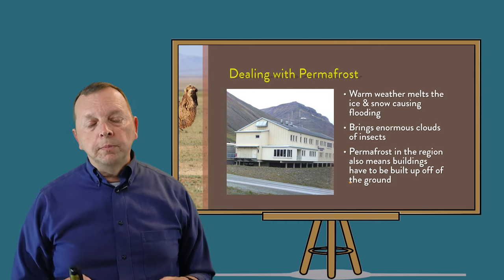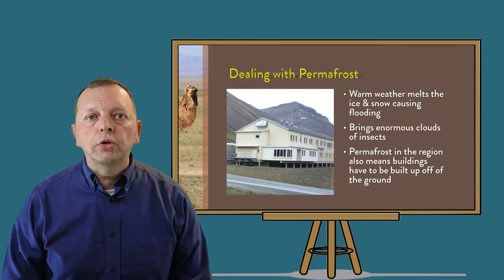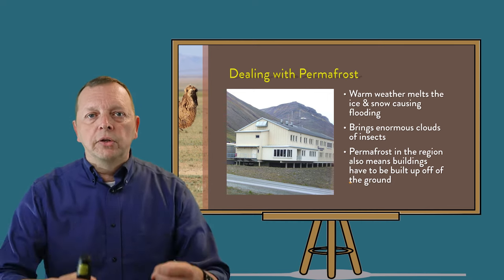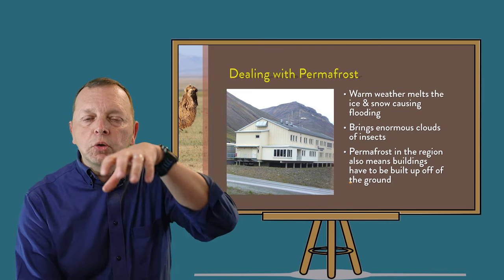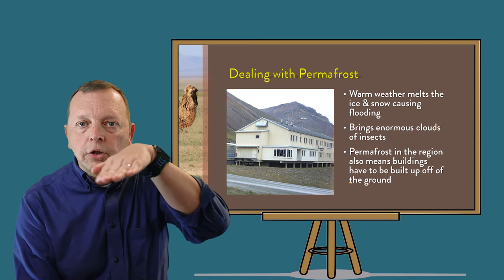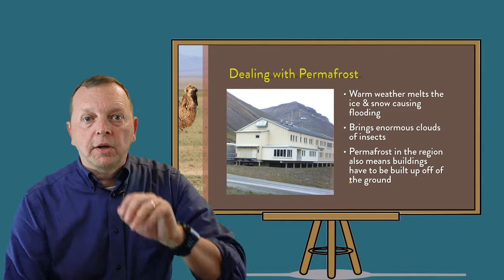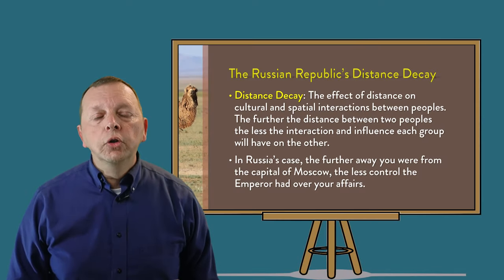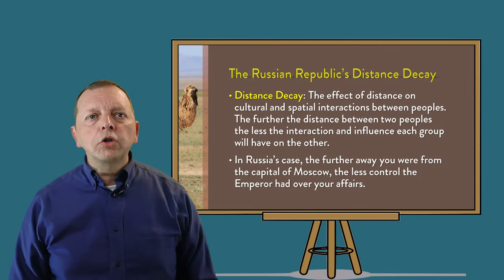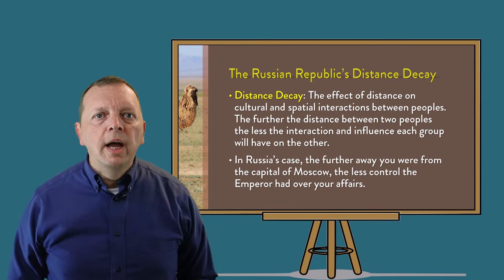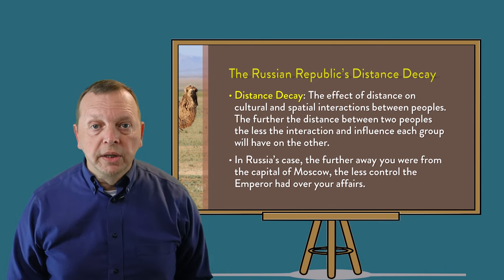The problem is that if they construct the foundation of their buildings directly on the ground, the heat of the building will melt the permafrost, causing the foundation and the rest of the building to become unstable. The solution that has been used by many is to build the structures on pylons and stilts, which provides space between the foundation and the ground, preventing the permafrost from melting.